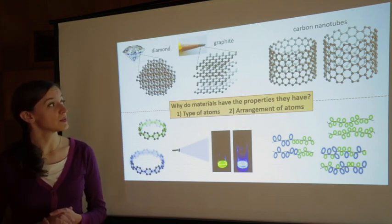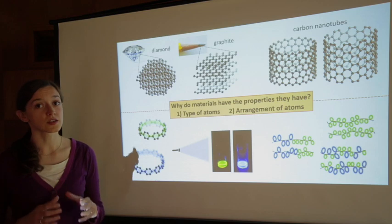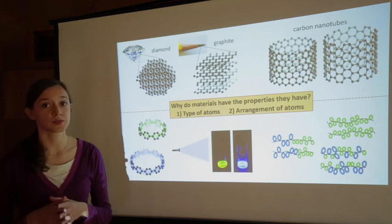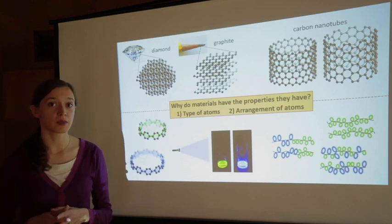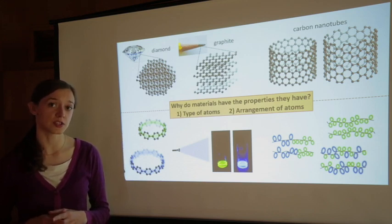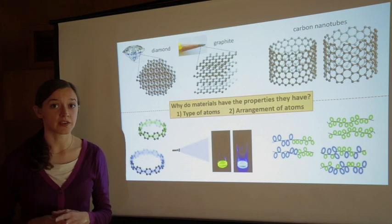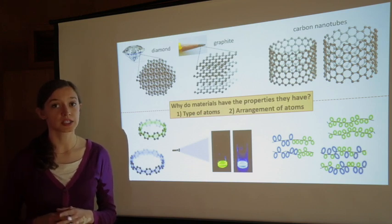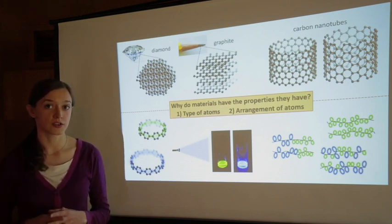There are other types of carbon materials too. Cylinders of carbon atoms are called carbon nanotubes, and carbon nanotubes are among the strongest and most lightweight materials we know of to date. But even in carbon nanotubes, the arrangement of atoms can vary, making some carbon nanotubes conductive like metals, whereas others are not.